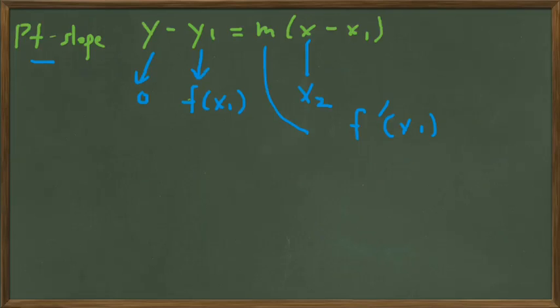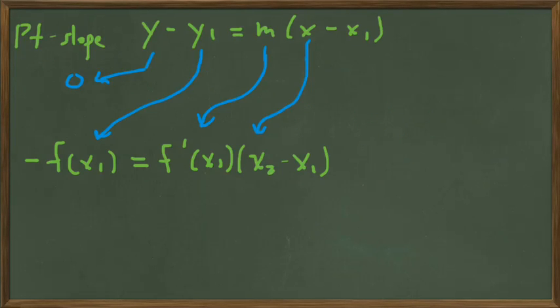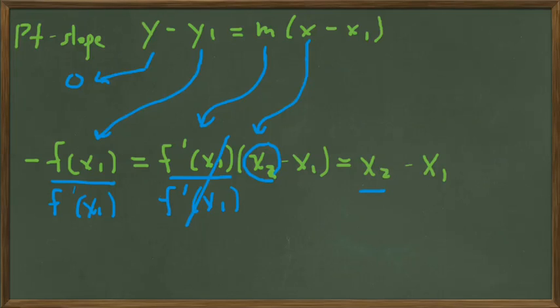So let's put that together in our point-slope formula. So I've extended the arrows to show what everything in the point-slope formula has turned into. Now we want to solve this equation for x2. So the first thing that we're going to do is divide through by this factor, f prime of x1, because it simplifies the equation on the right to just be x2 minus x1.